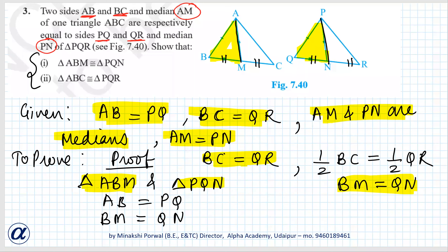Now in triangle ABM and triangle PQN: AB equals PQ, BM equals QN, and AM equals PN. So triangle ABM is congruent to triangle PQN. By which congruence rule?